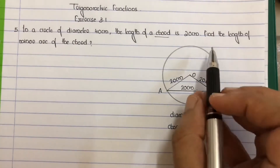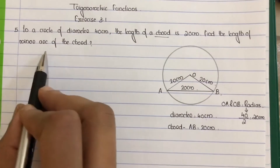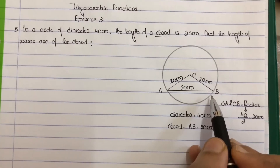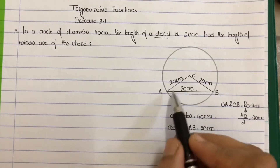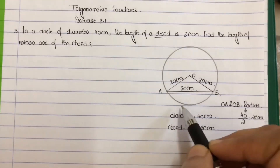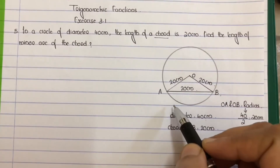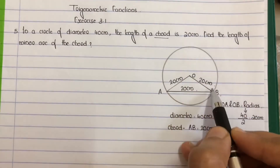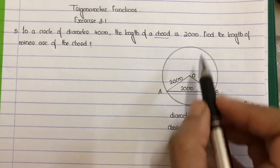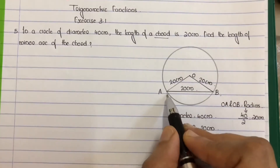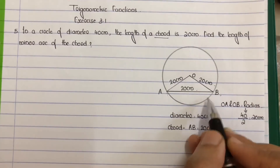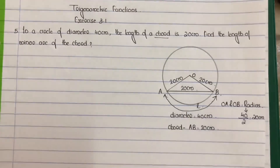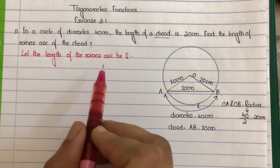Next, find the length of the minor arc of the chord. The chord AB divides the circle into 2 parts. One is a small arc and one is a big arc. The minor arc is the small one. We need to find the length of this small arc. Let the length of the minor arc be L.